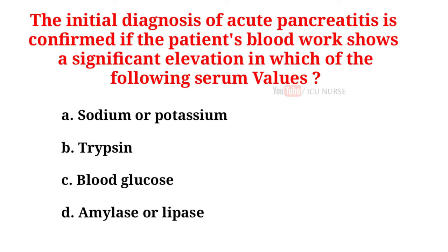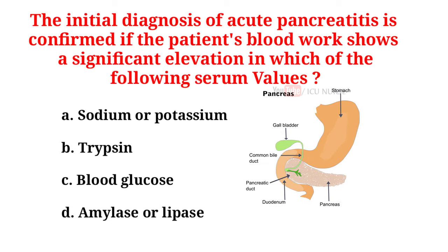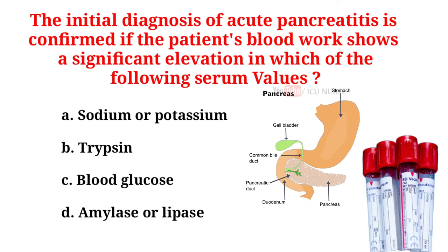The initial diagnosis of acute pancreatitis is confirmed if the patient's blood work shows a significant elevation in which of the following serum values? A. Sodium or potassium. B. Trypsin. C. Blood glucose. D. Amylase or lipase. And the correct answer is D. Amylase or lipase.